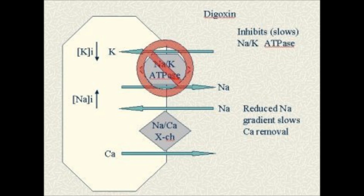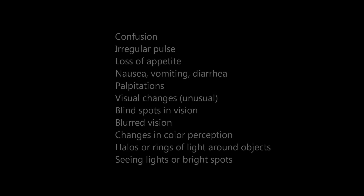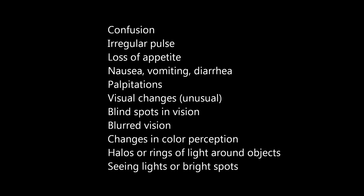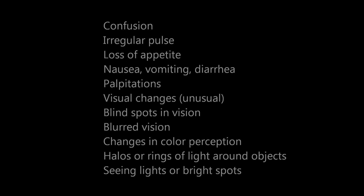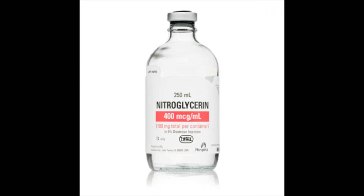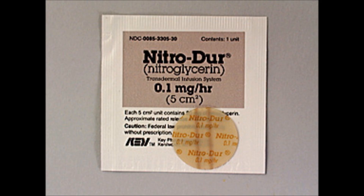For inotropes, the adverse effect is digoxin toxicity and arrhythmias. Signs of digitalis toxicity on EKG include anorexia, nausea, and visual changes. Lipid-lowering medications include lovastatin (Mevacor), pravastatin, and simvastatin. Nitrates prevent and treat chest pain by vasodilating the coronary arteries, lowering blood pressure, and reducing preload. They also treat CHF by reducing preload and afterload.